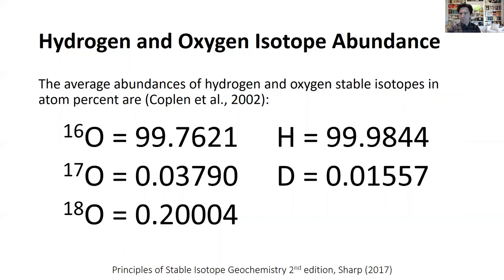Then we have two much less common varieties: oxygen-17, which is eight protons but nine neutrons — very low abundance, less than 0.03%. And then we've got oxygen-18, which consists of eight protons but 10 neutrons. This is the heaviest variety, and it makes up about 0.2% of all oxygen in the earth's system.